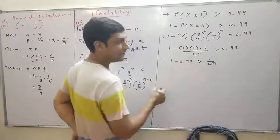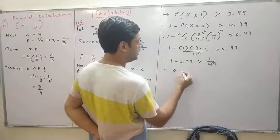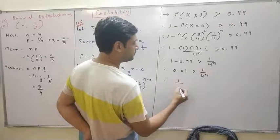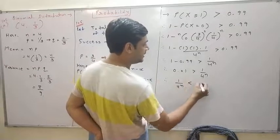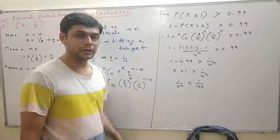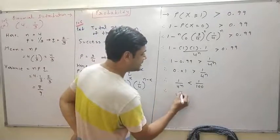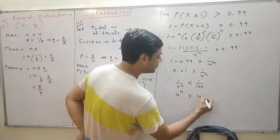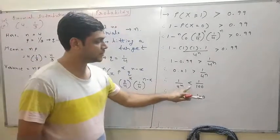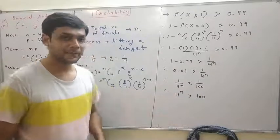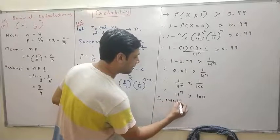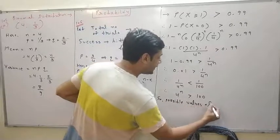So 0.01 is greater than (1/4) raised to n, meaning (1/4) raised to n is less than 0.01, which is 1 by 100. When we take the reciprocal, the inequality changes. So (1/4) raised to n less than 1 by 100 becomes 4 raised to n is greater than 100. Now n is a whole number, so we check possible values.